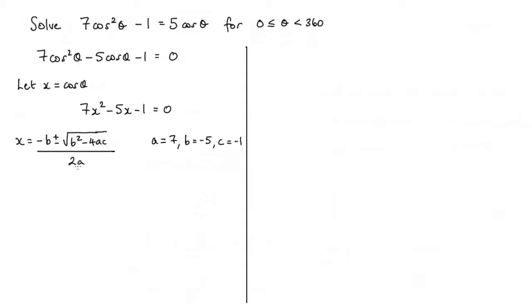So popping these values into this formula, we'll have that x is equal to, so minus b, so minus minus 5 would give me a plus 5, plus or minus the square root of b squared, which would be minus 5 squared, 25, minus 4 times a. So 4 times a would be 28 times minus 1, so I'd have a negative 28. I've already got a negative here, so I'd have to have a plus 28. That's all over 2 times a. 2 times 7 is 14.